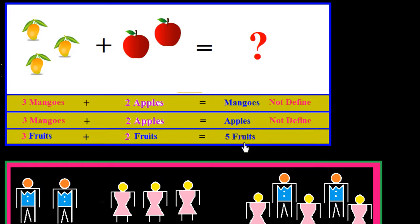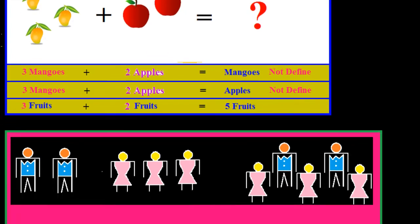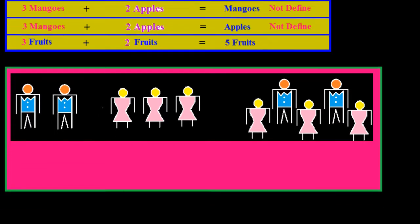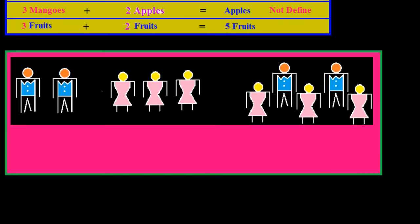So the main characteristic of addition is that the units must be the same. Now I explain with another example. Here we have two boys and three girls.